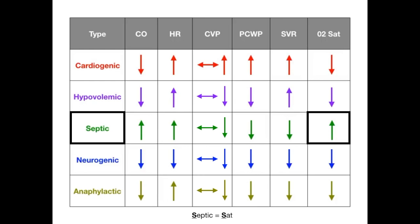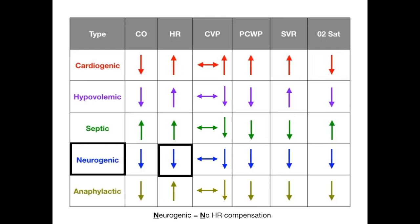The other exception to pay attention to is neurogenic shock, where heart rate is down. In all other types of shock, heart rate is up to compensate, but in neurogenic shock you don't have the sympathetic tone required to drive that heart rate. Remember this as neurogenic has no heart rate compensation — matching those N's: neurogenic equals no.